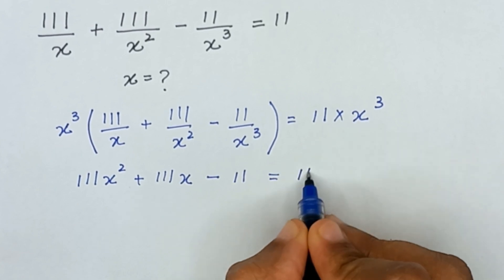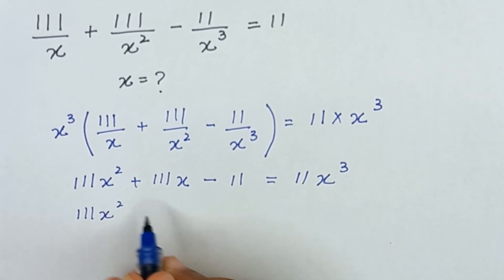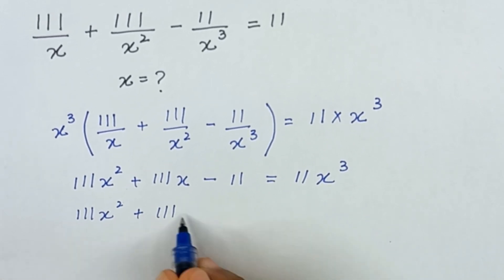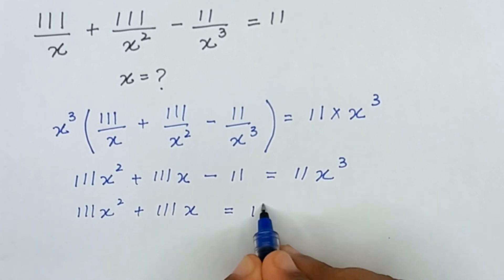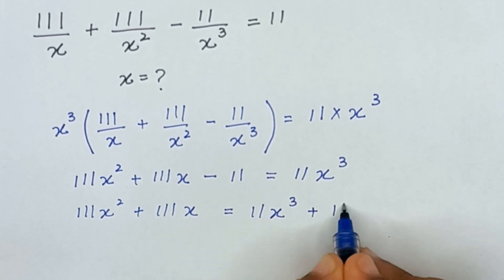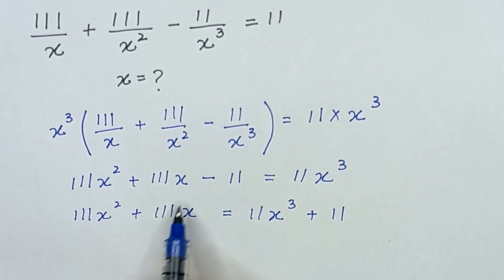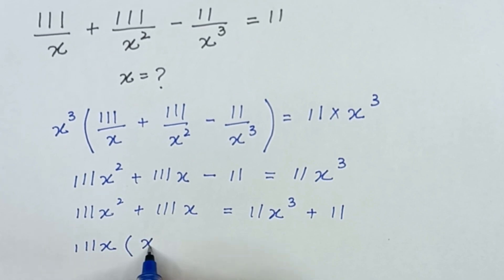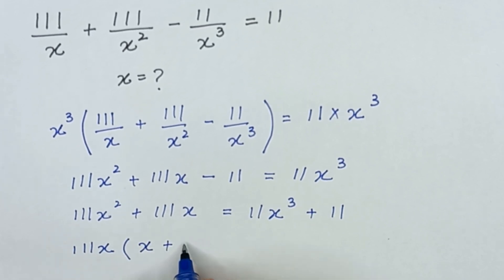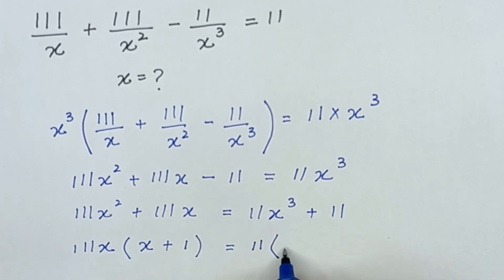Then minus x³ divided by x³ will cancel out, so it becomes minus 11, which is equal to 11 times x³, giving us 11x³. In the next step, 11x³ plus 11x — we will take the negative 11 to the right-hand side so it will become positive 11. From these two terms, 11 and x are common, and we have 11 is common on the right side, giving x³ plus 1 divided by 1.